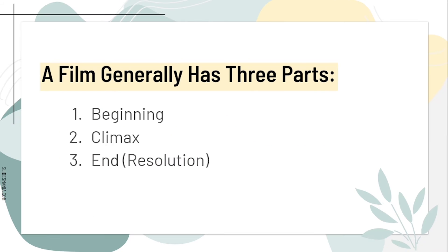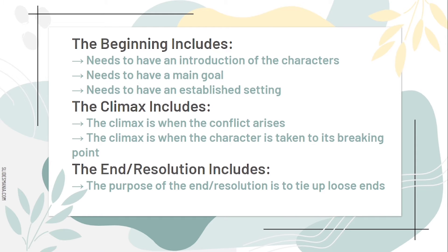A film generally has three parts: a beginning, climax, and end. The beginning needs to have an introduction of the characters, a main goal, and an establishing shot. The climax is when the conflict arises and is when the character is taken to its breaking point. The purpose of the end or resolution is to tie up all the loose ends.